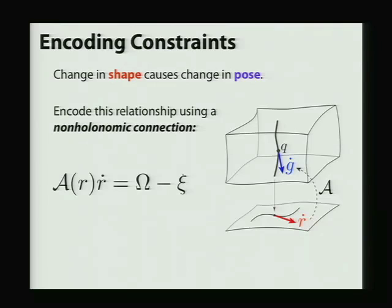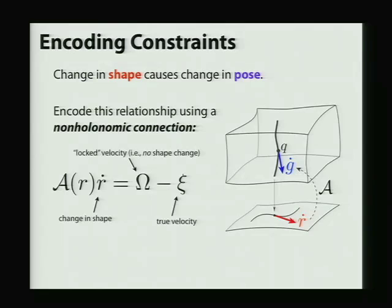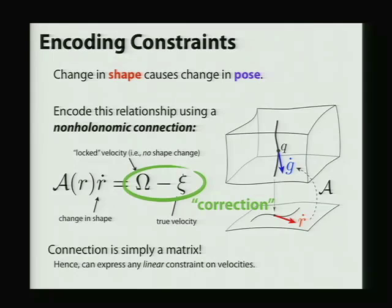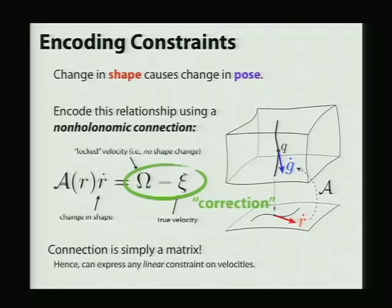So specifically, if we have this non-holonomic connection A, we apply it to our change in shape r dot, and it's going to give us the difference between the locked velocity, meaning the velocity of the system if there are no shape changes, if we're not actually turning the steering wheel, and the true velocity of the system, meaning the velocity of the system as it should be if we're respecting the constraints. And so we can think of this quantity that the connection spits out as a correction or course correction to our trajectory that makes it respect the constraints. In our case, for the vehicles we study in this paper, we're going to encode this connection simply as a matrix, and we can get this by differentiating our constraints. And so we can express any linear constraint on velocities.